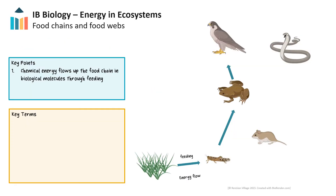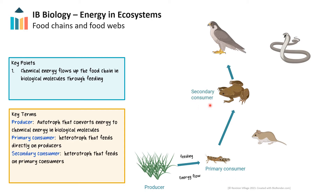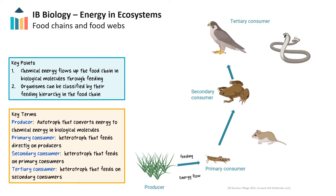The chemical energy contained within these biological molecules is then passed up the food chain through feeding. Arrows in food chains indicate the direction of flow of chemical energy. All food chains begin with a producer. Primary consumers are the organisms that feed directly on producers, while secondary consumers feed on primary consumers. This feeding hierarchy continues to tertiary and quaternary consumers, and so on.